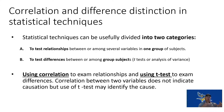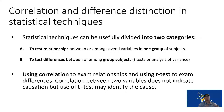A correlation between two variables does not indicate causation, but a t-test may identify a cause. Because we're using some kind of independent variable intervention — we're changing something to see if that change has an effect on the group compared to the group that does not have that effect.